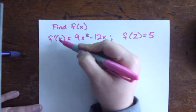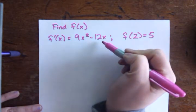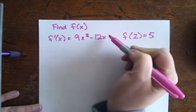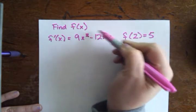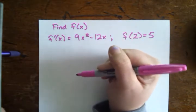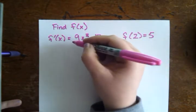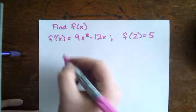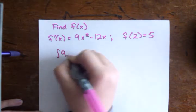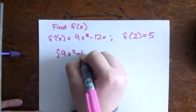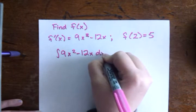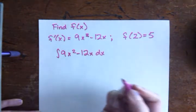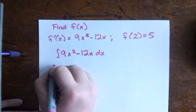So in order to figure out what f of x is, the first step is to find the integral of this derivative here, because integrals are kind of doing derivatives backwards. We want to go from f prime of x back to f of x, so we're going to have to take an integral. So let's do the integral of 9x squared minus 12x dx. And this is just using the rules of integration that you already know.